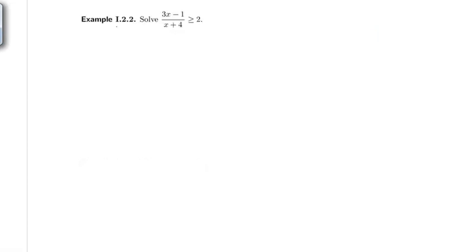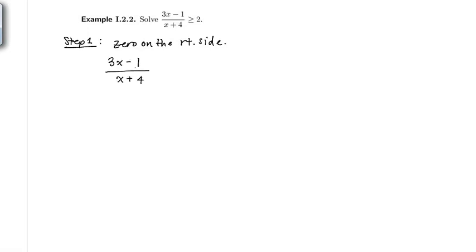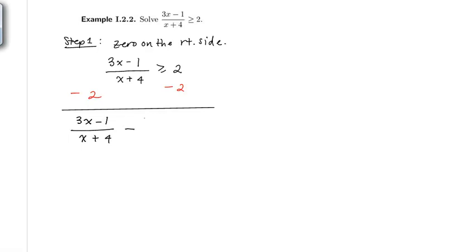Let's look at example i2.2: solve (3x minus 1) divided by (x plus 4) greater than or equal to 2. Remember, we're going to have an interval of numbers because this is an inequality. The first thing — step one — is to get zero on the right side. So we subtract 2 from each side to get (3x minus 1) over (x plus 4) minus 2 greater than or equal to 0.